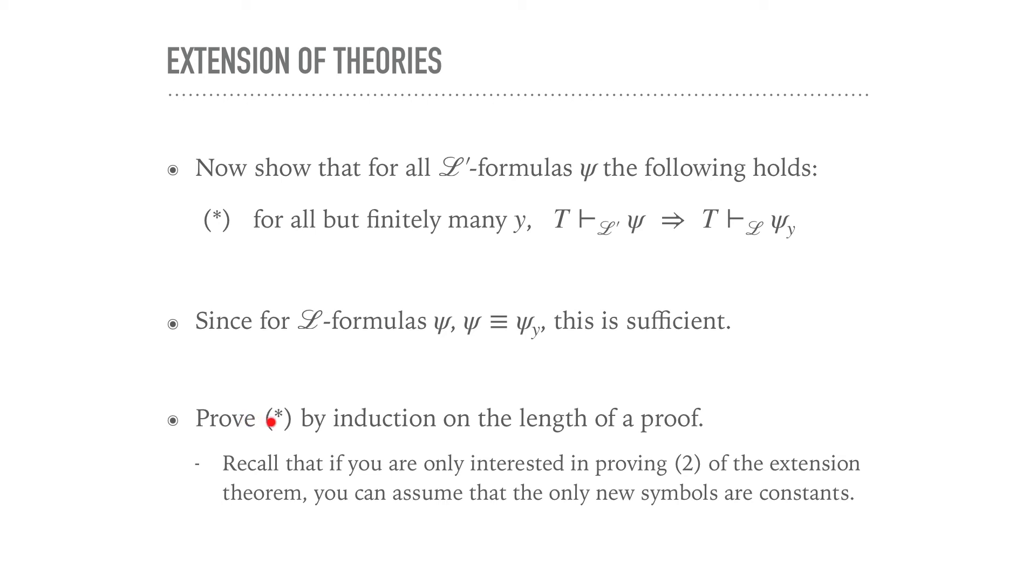And you prove this fact star here by induction on the length of a proof. And recall, if you're only interested in proving 2 of the extension theorem for Henkin theories, you can assume that the only new symbols are constants. Otherwise, you have to deal with a few more cases. But you should definitely try both.